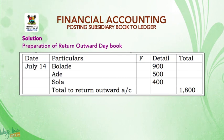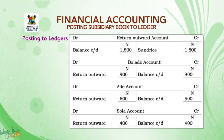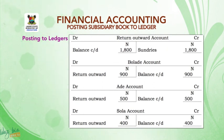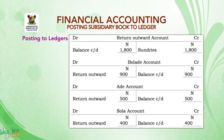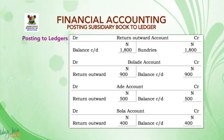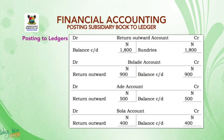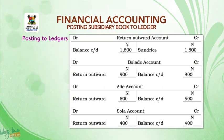Posting to ledger: return outward account will be credited with sundries 1,800 and debit side balance carry down 1,800. Bolade account debited with return outward 900, balance carry down on the credit side 900. Ade account debited with return outward 500, credit side balance carry down 500. Shola account debit side return outward 400, balance carry down on the credit side 400.